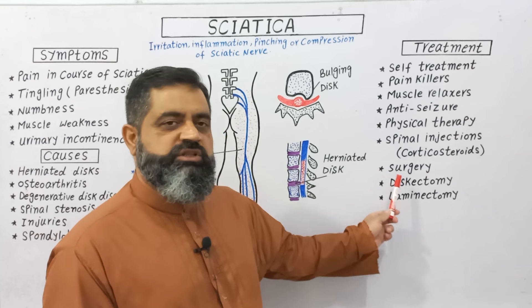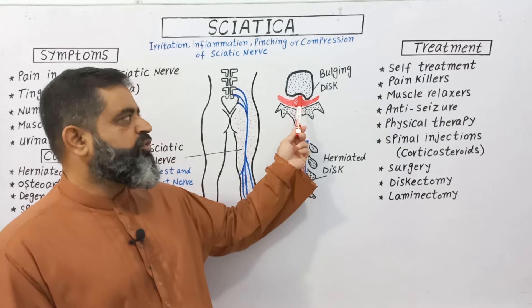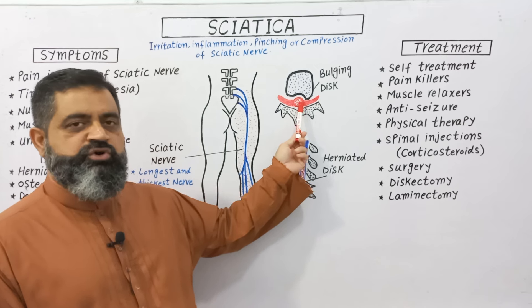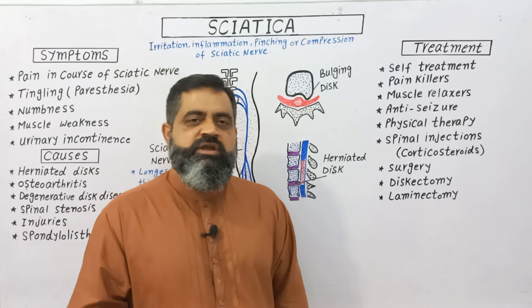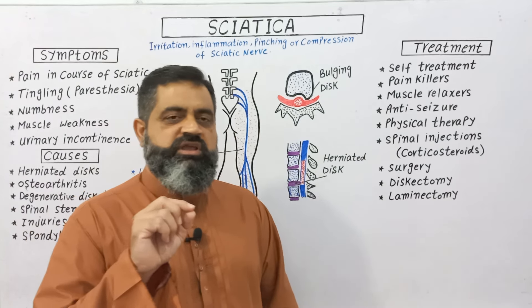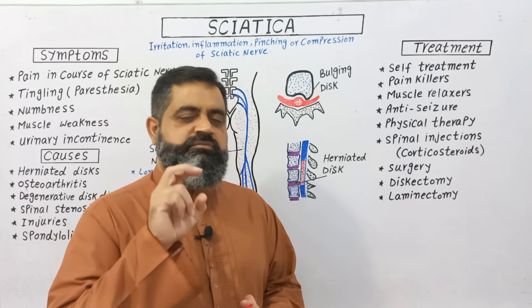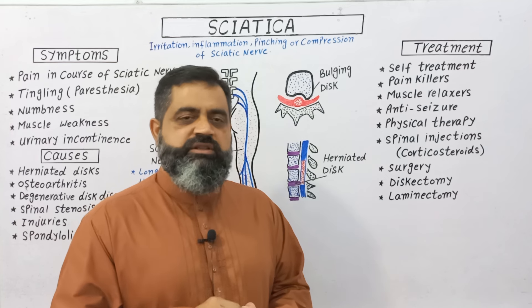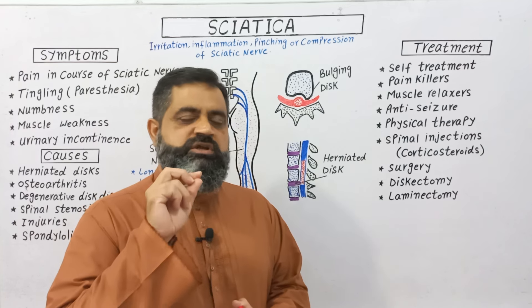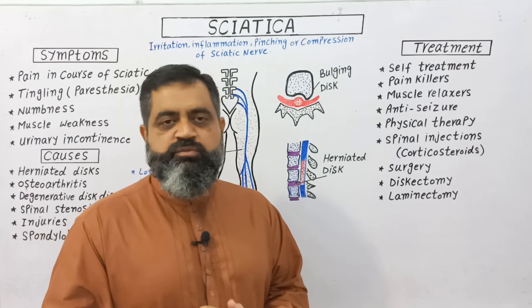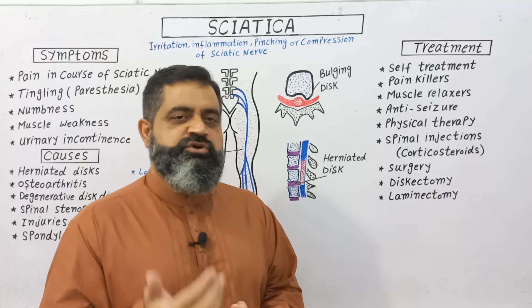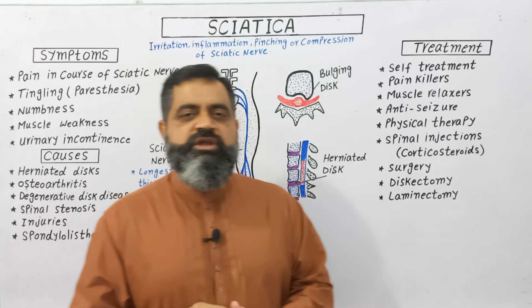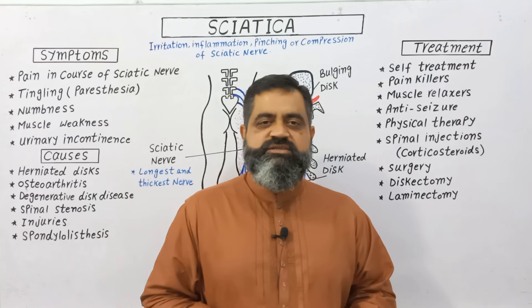Two surgical options are available. During a discectomy, the part of the bone pressing on the sciatic nerve is cut and removed from the body. During a laminectomy, the inflamed membrane of the spinal cord that is causing sciatica pain is removed from the body, which helps to reduce or ease the pain of sciatica. That's all for today — hopefully see you in the next lecture. Until then, bye.